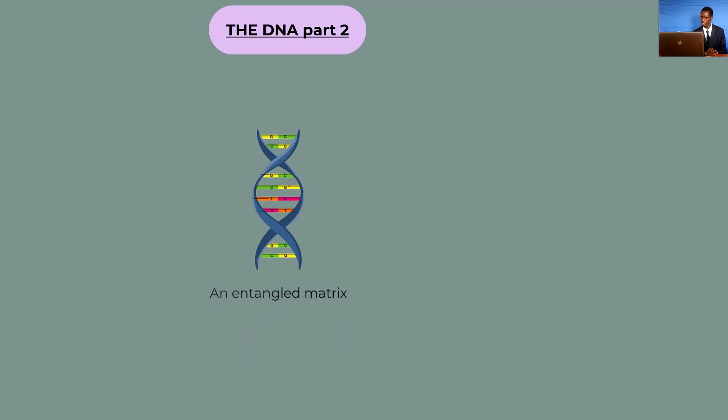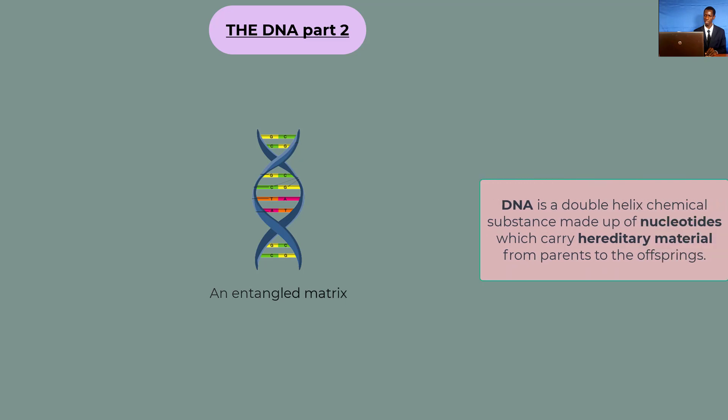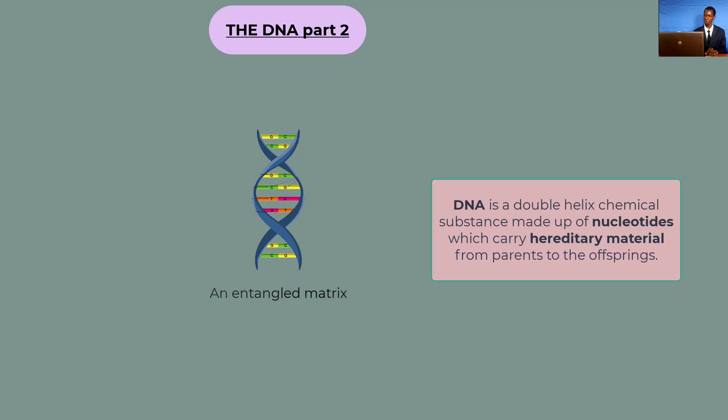That is a DNA molecule. There are several other substances that it comprise of that we are going to look at today. But before that, let's start by defining the term DNA molecule. DNA is a double helix chemical substance made up of nucleotides which carry hereditary materials from parents to their offsprings.